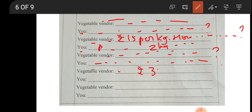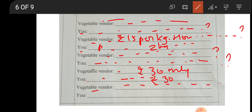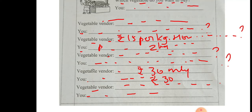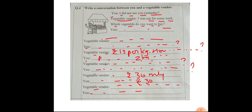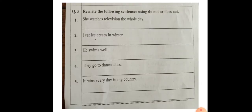You say: 'Please take these 30 rupees.' Vegetable vendor: 'Thank you, please do come again.' You reply: 'Okay, thank you.' Please listen to this conversation again and again and try to write it on your own.